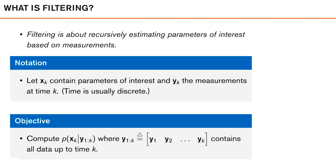These measurements can come from one sensor or multiple sensors. If they come from multiple sensors, we usually call it fusion or sensor fusion, but in theory it's basically all the same. In this course, we will not focus so much on whether our measurements come from one or multiple sensors. If we know how to do it for one sensor, adding another sensor is in many cases trivial.